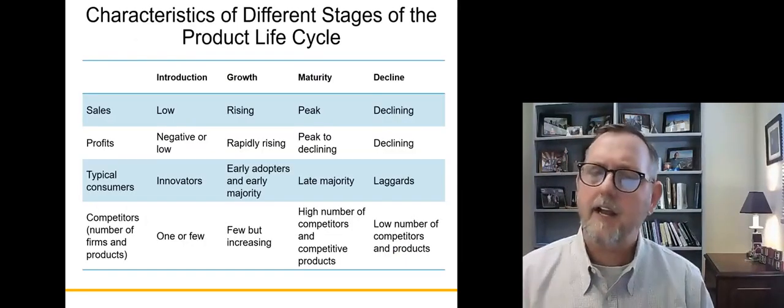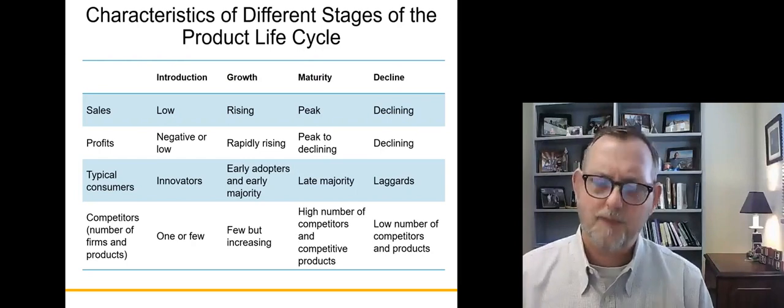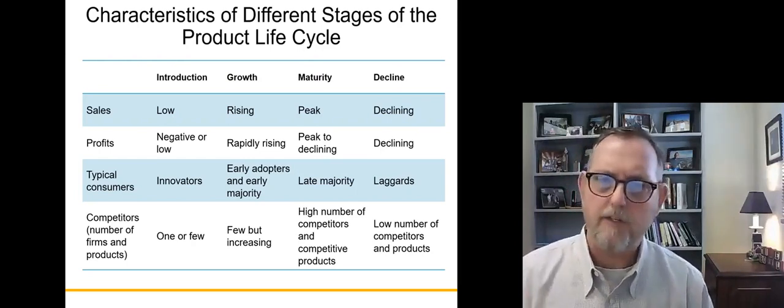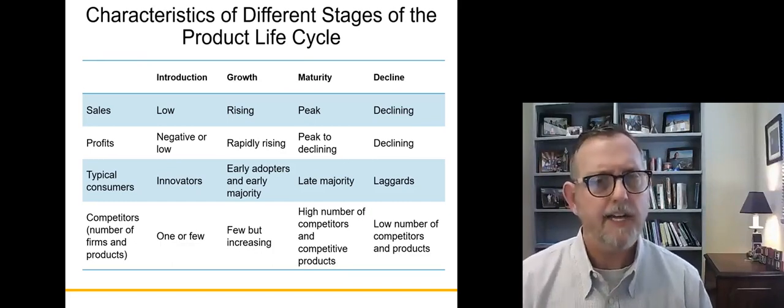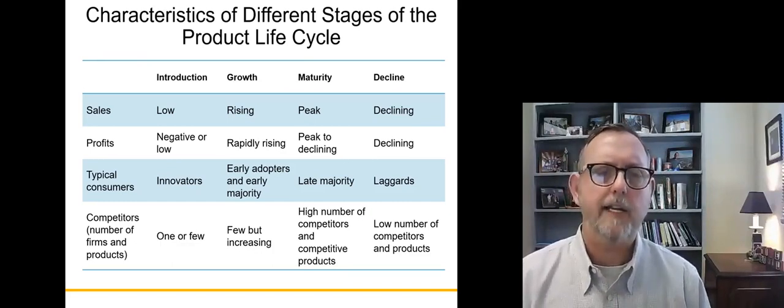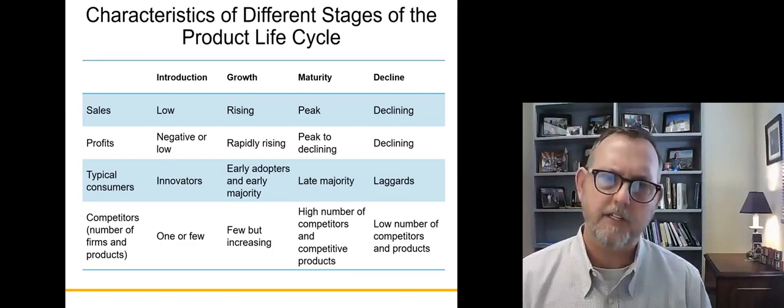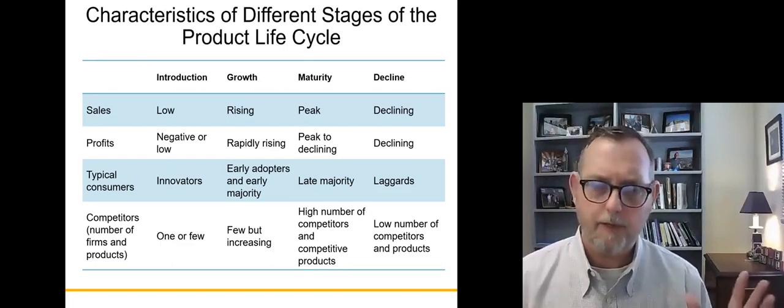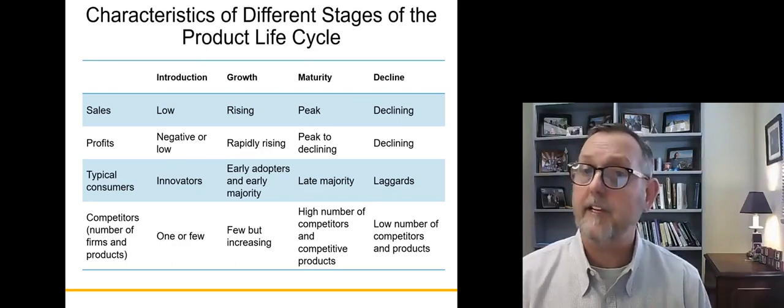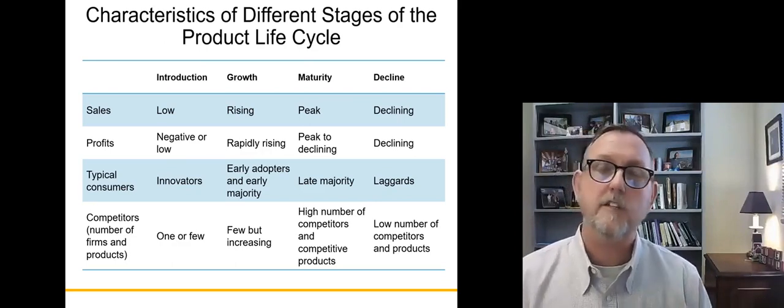Each of the product lifecycle charts will have four different specific categories. There's the introduction phase, where sales are slow, profits are negative, and the people who are buying the product are called innovators. They're the new people who never bought the product before, but they're very innovative people.